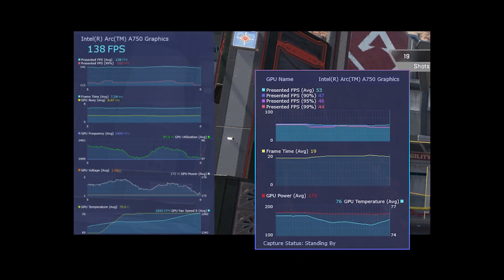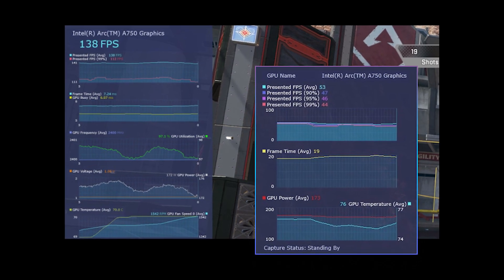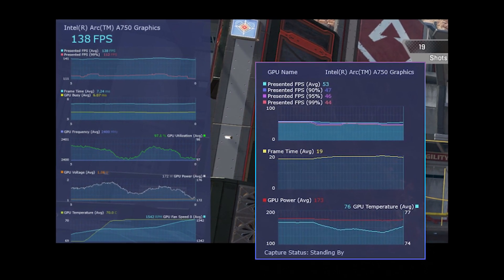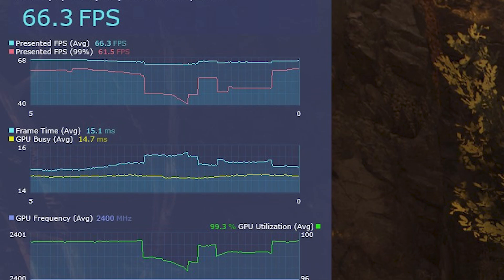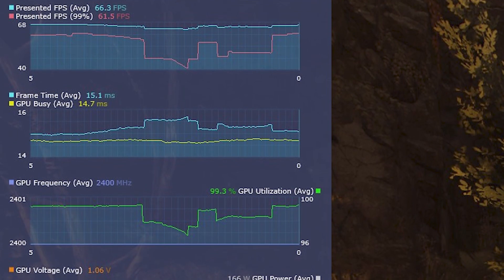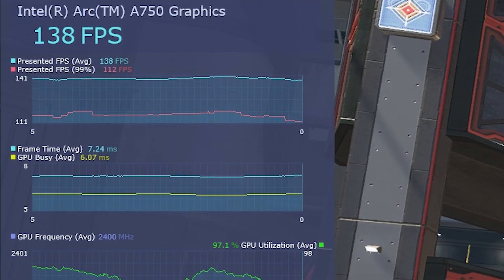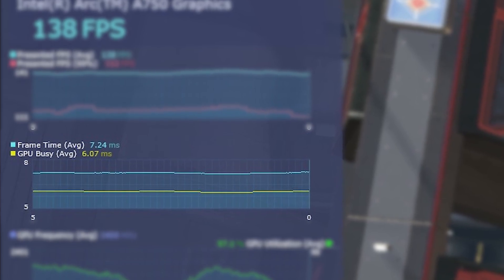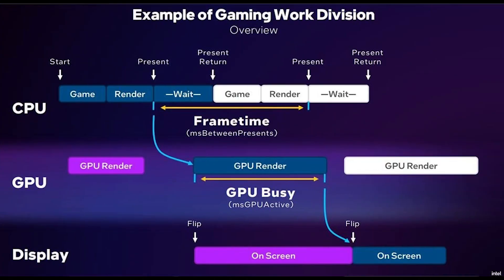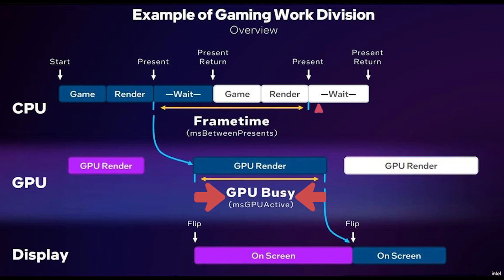GPU Busy is something that totally changes how the performance of any hardware in games can be monitored more accurately. Unlike frame time, which is currently the most popular metric to understand stutters in-game, GPU Busy will focus more on how a GPU is being used in real-time. Intel has revealed its working, showing how GPU Busy will function. Unlike frame time, which covers three segments including wait, game, and render, GPU Busy will extend its functionality towards another wait section, bringing in more data to understand how the GPU is working.